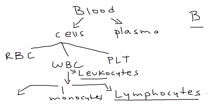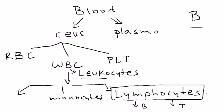These lymphocytes are what we're talking about, and there are two types: B lymphocytes and T lymphocytes. Hodgkin's lymphoma is concerned with the B lymphocyte, and it is the malignant proliferation of the B lymphocyte that is at the heart of this disorder.